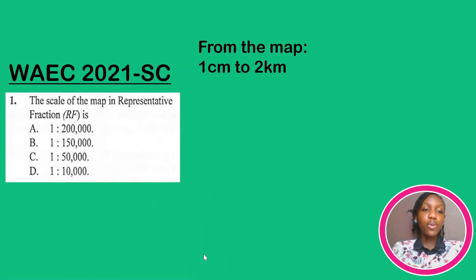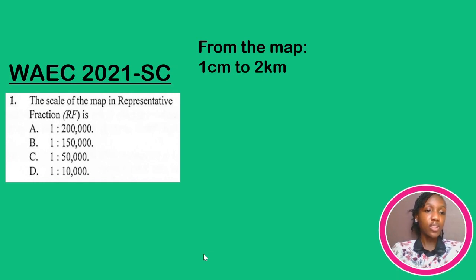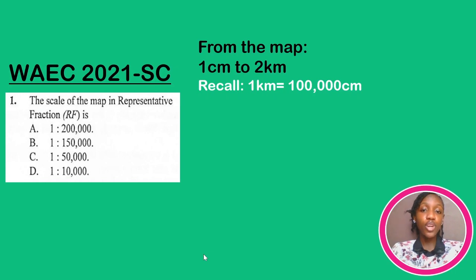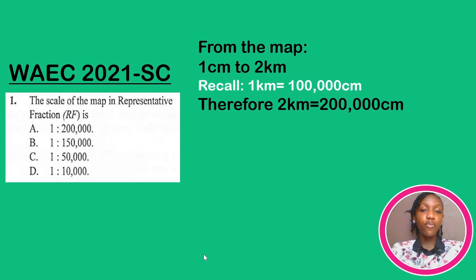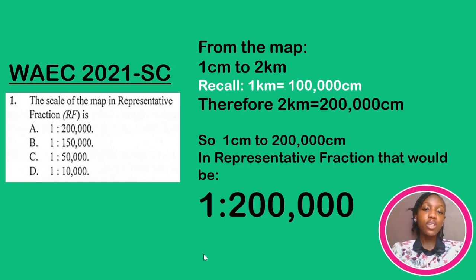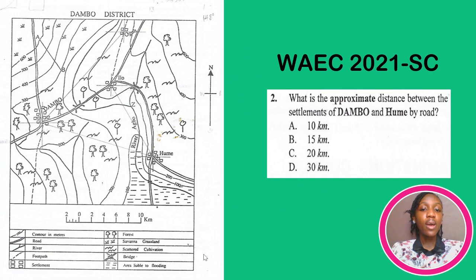Now that we've established that the linear scale reads one centimeter to two kilometers, we need to convert it to representative fraction as the question asks. Recall, one kilometer equals 100,000 centimeters. Therefore, two kilometers will be 200,000 centimeters. So one centimeter to 200,000 centimeters — the units cancel out — and in representative fraction that gives us 1:200,000. And that is option A.